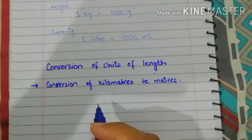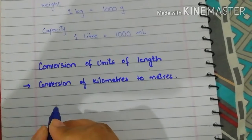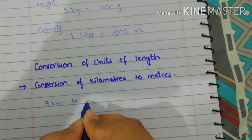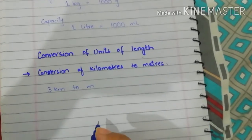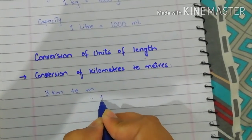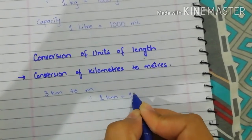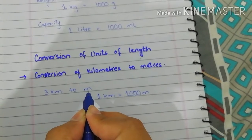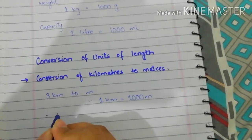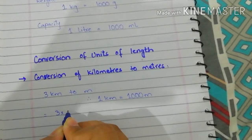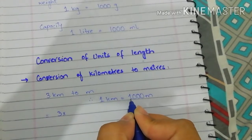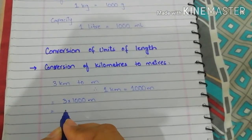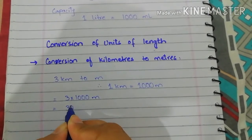Let's understand with the help of an example. Convert three kilometers into meters. As we know that one kilometer is equal to one thousand meters, we convert a bigger unit into a smaller unit, so we just multiply. Three multiplied by one thousand — so three times one thousand equals three thousand meters.